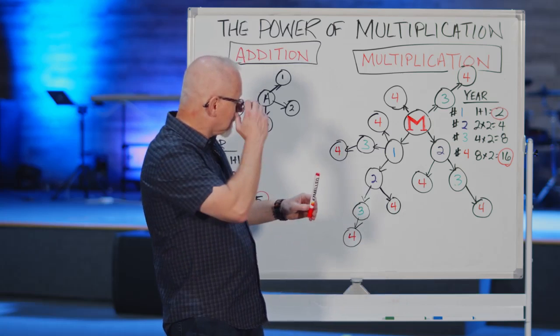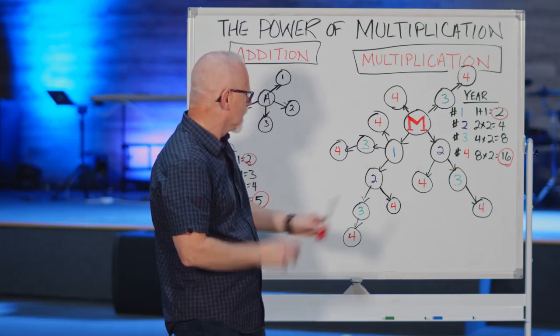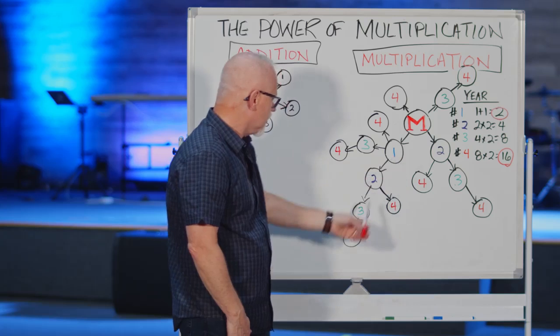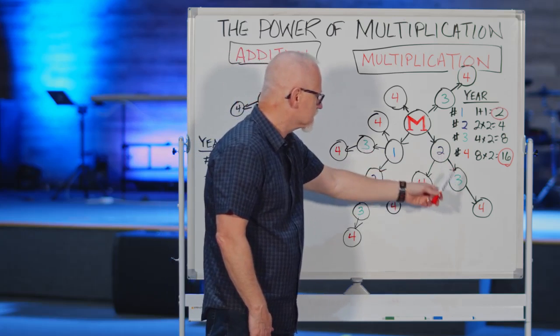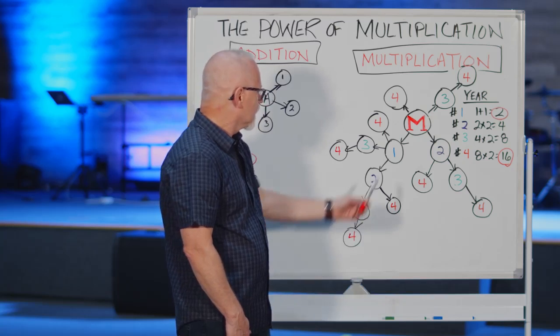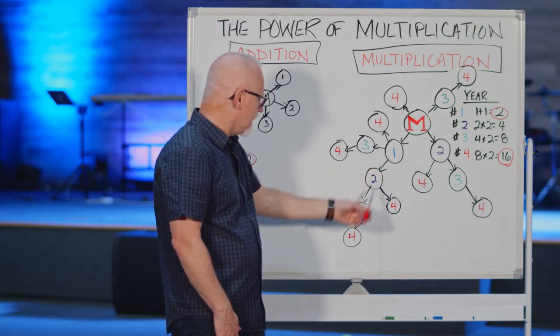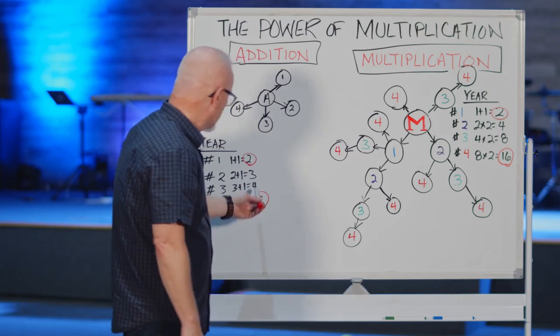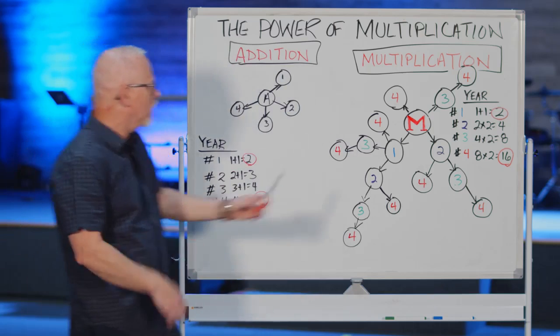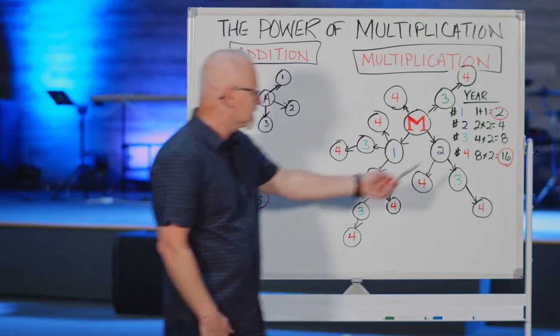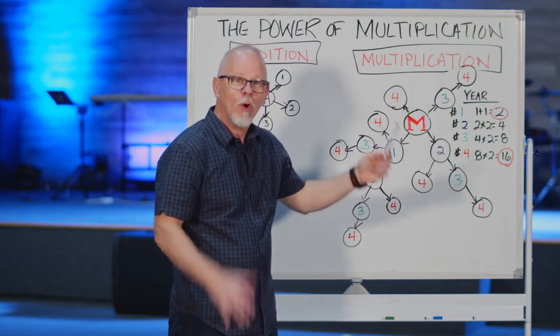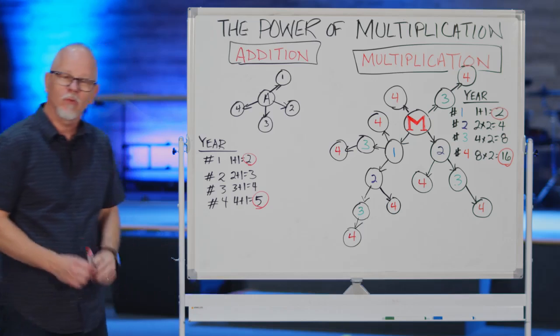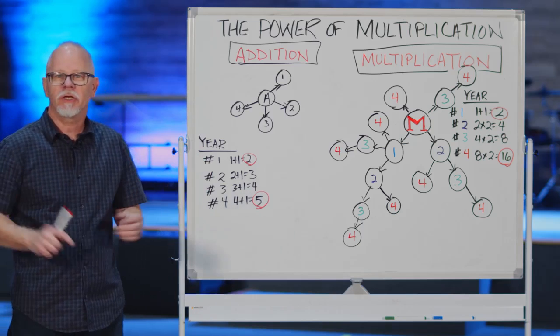Now, then the third year, this original disciple maker makes a new disciple. His first disciple makes a new disciple. His second disciple makes a new disciple. His first disciple's disciple makes a disciple. And so now you have eight. Eight versus four. That's twice as good, but it gets even better. When you get to the fourth year, the fourth generation, this eight all make one disciple. So that would be 16 compared to five, which is better, which is going to reach the world, which is going to change history.